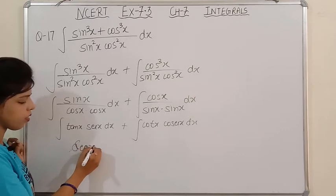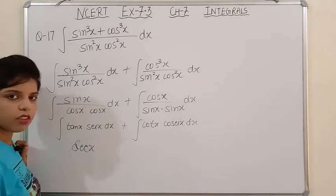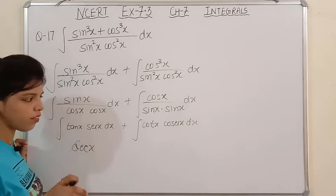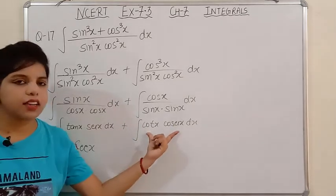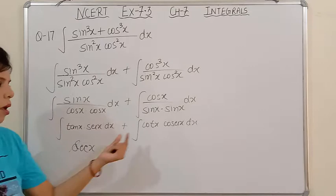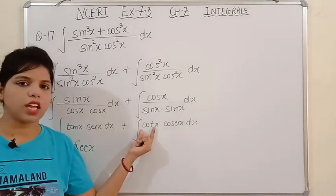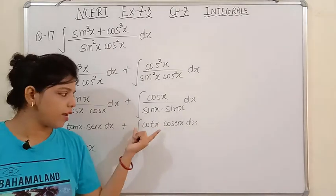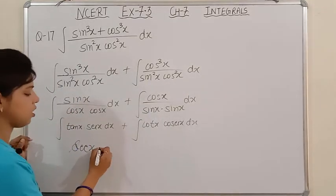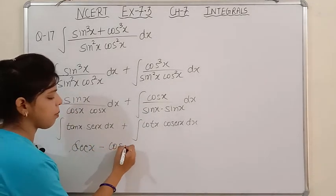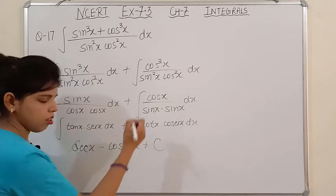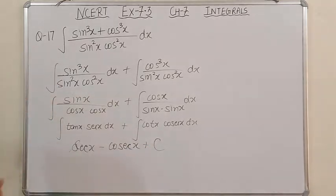And this term — whose derivative is it? It is the derivative of cosec x, but the derivative of cosec x is negative. The derivative of cosec x is minus cosec x · cot x. So since this term is positive here, its integration will be minus cosec x. So the final answer is sec x minus cosec x + C. Very simple, please note down.